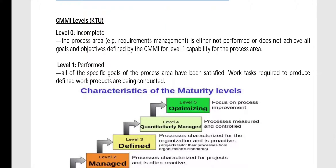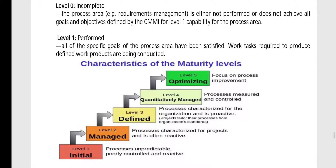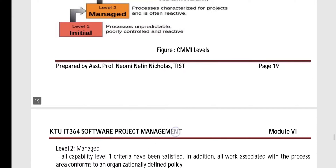Now in detail, what are the CMMI levels — this is an important KTO question. Levels range from 0 to 5. Level 0 is the incomplete level, where the process area is either not performed or does not achieve all the goals and objectives defined in CMMI. Level 1 is the performed level, where all the specific goals of the process area have been satisfied. Level 2 is the managed level.